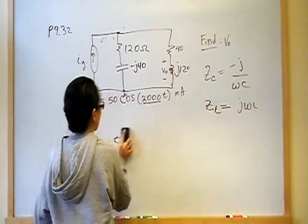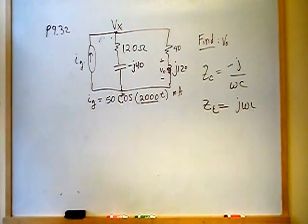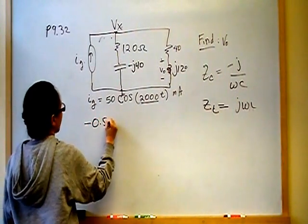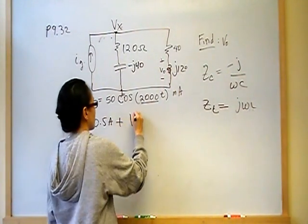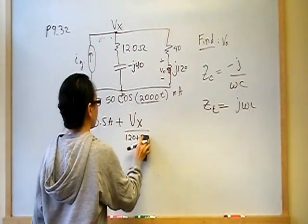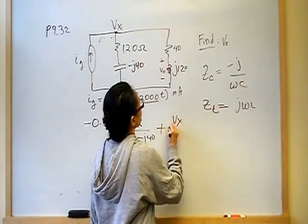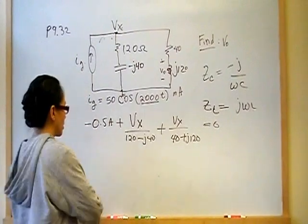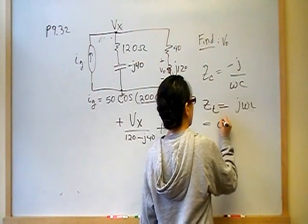The obvious node is at the top — this will be my ground node and this will be my V_X. Applying KCL at that node: going into the node we have negative 0.05 amps, plus V_X over (120 minus J40), plus V_X over (40 plus J120). All of that has to equal zero. Moving the current source term to the other side gives us 0.05 amps.